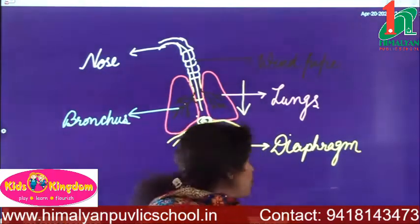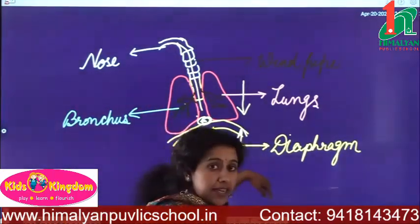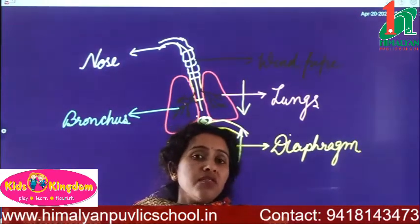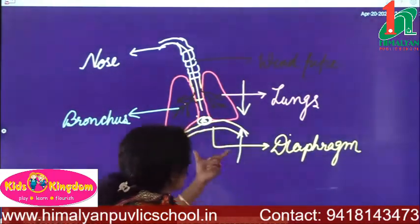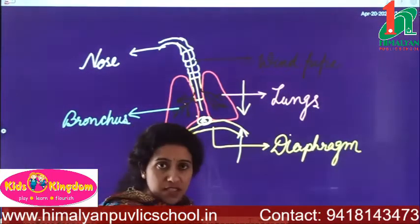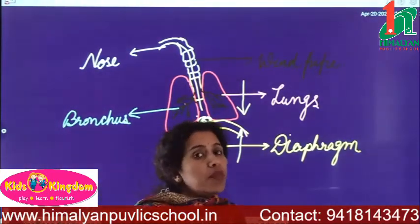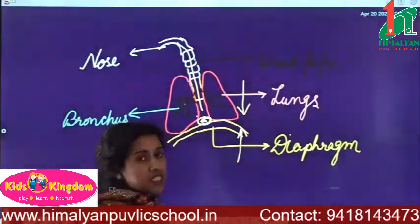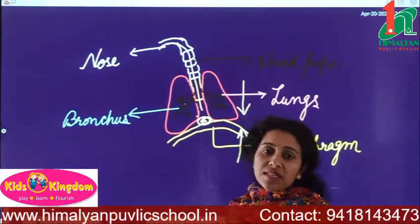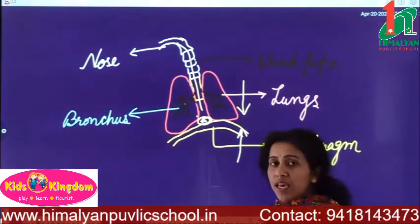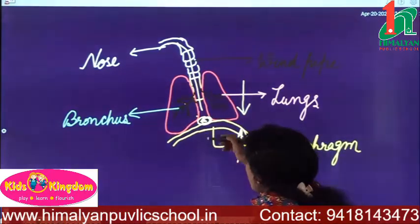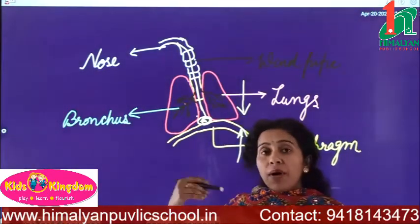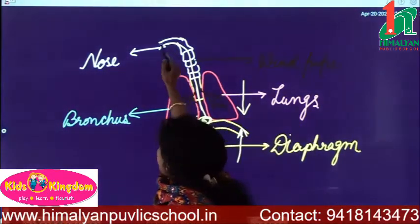When we take air inside the body, the oxygen present is carried through the blood. When we pass air out from our body, carbon dioxide, which the body does not need, travels through the windpipe and passes out from our body.